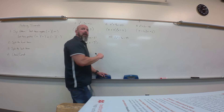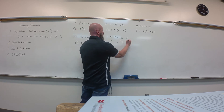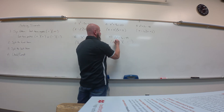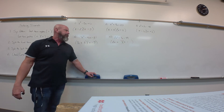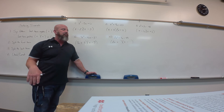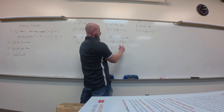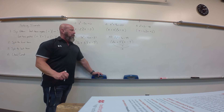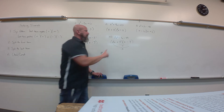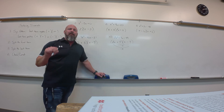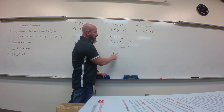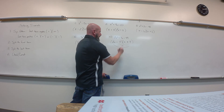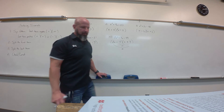For 2x² + 7x − 49: sign pattern is plus-minus. Split the front: 2x and x. For 49, I try 7 and 7. That gives negative 14 and positive 7, which is negative 7 — the exact opposite of what I wanted, which is positive 7. Since I got the exact opposite, I switch the signs, giving positive 14 and negative 7. That works.